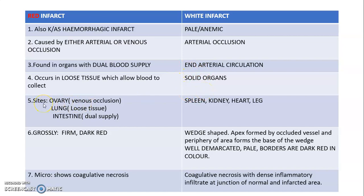Sites of red infarcts include the ovary due to venous occlusion, torsion of the testis, the lung (a loose tissue), and the intestine (which has dual blood supply). White infarct is seen in the spleen, kidney, heart, and leg.